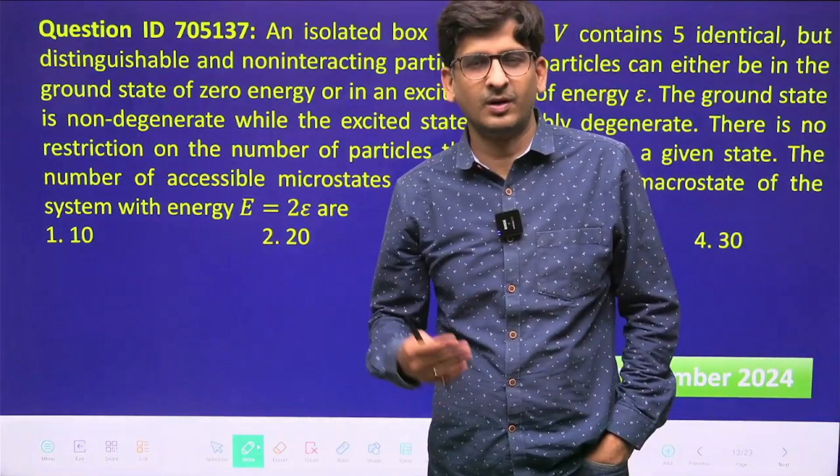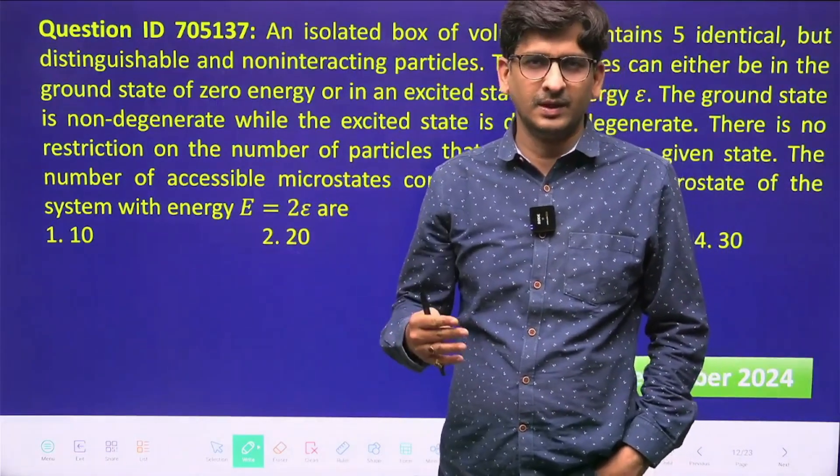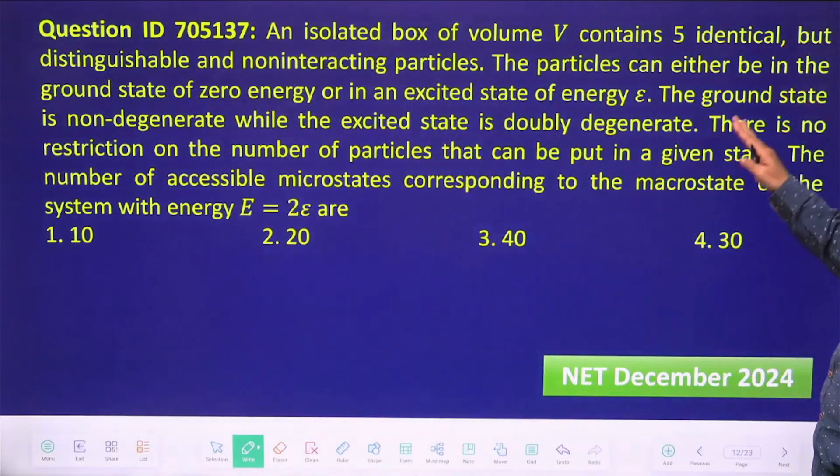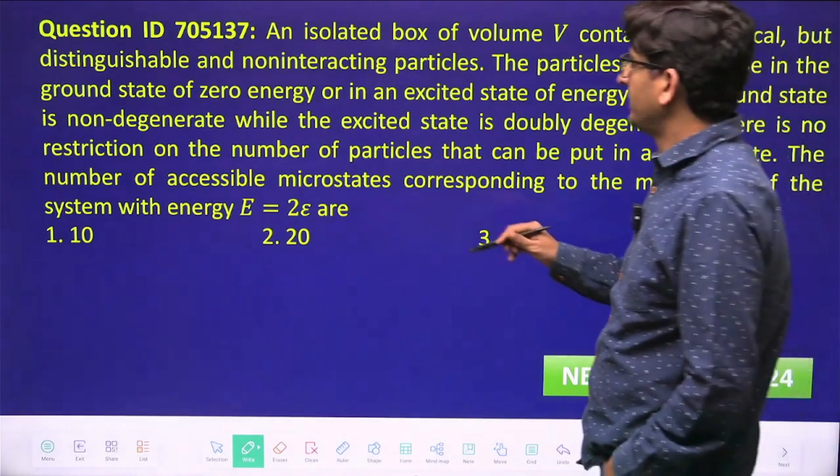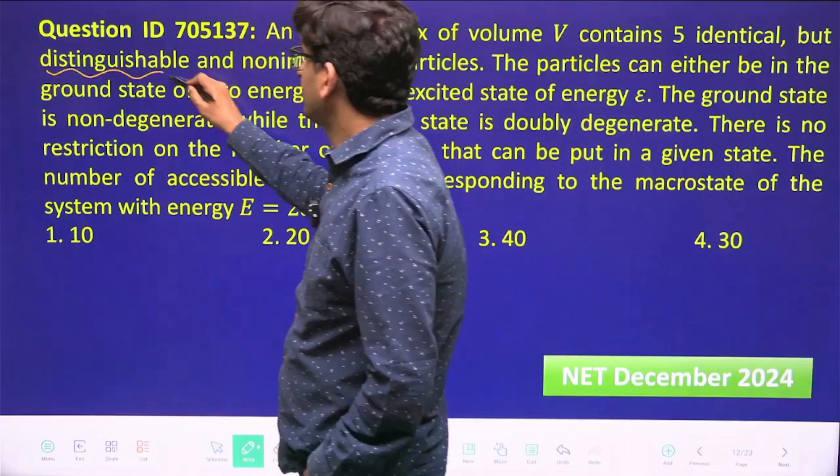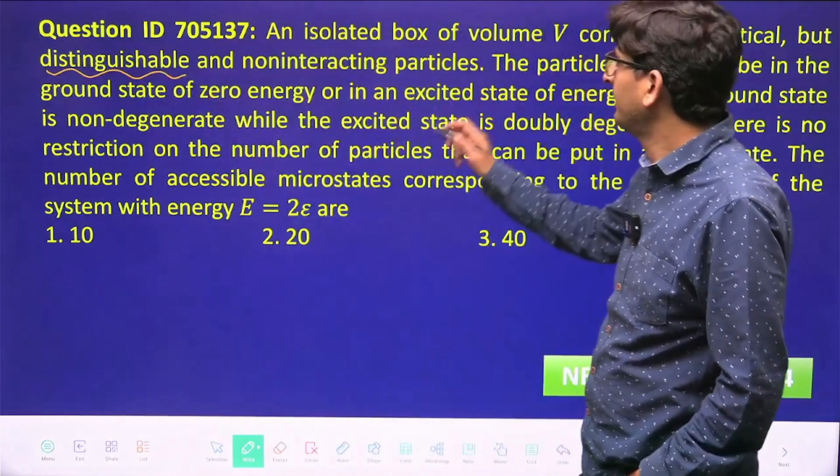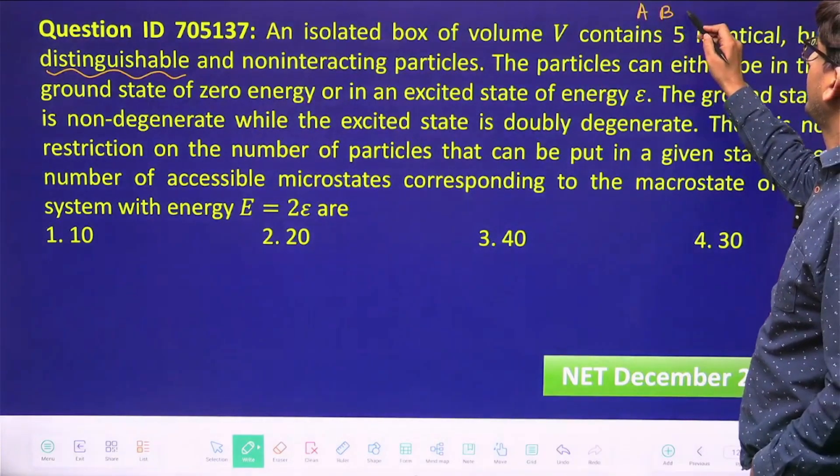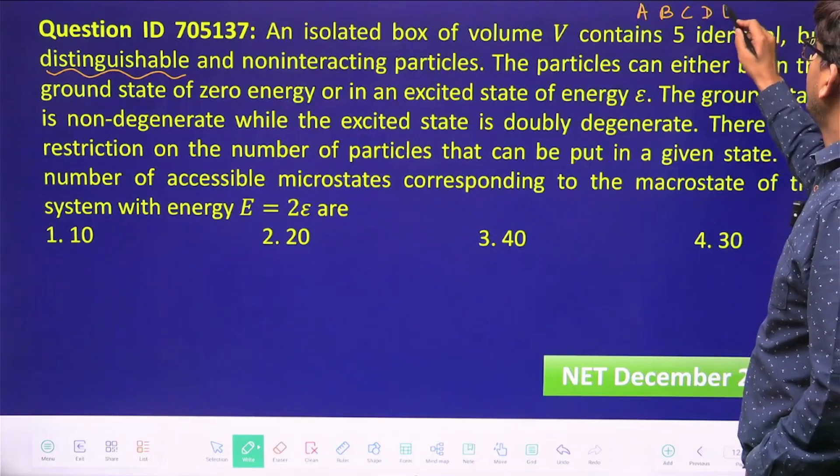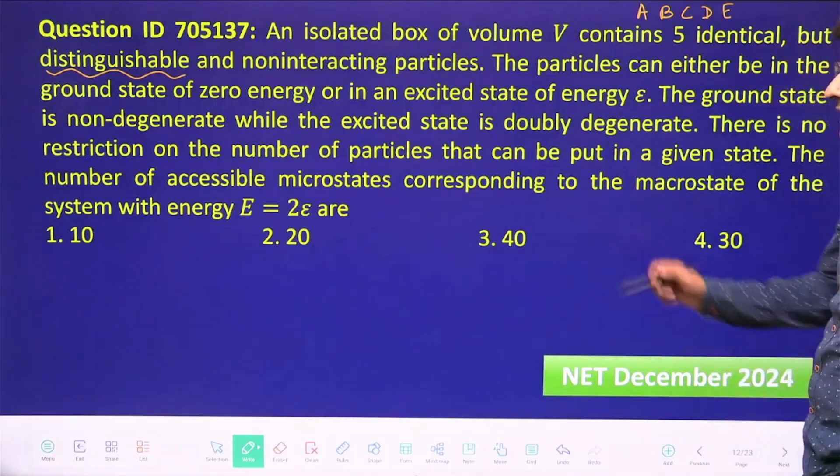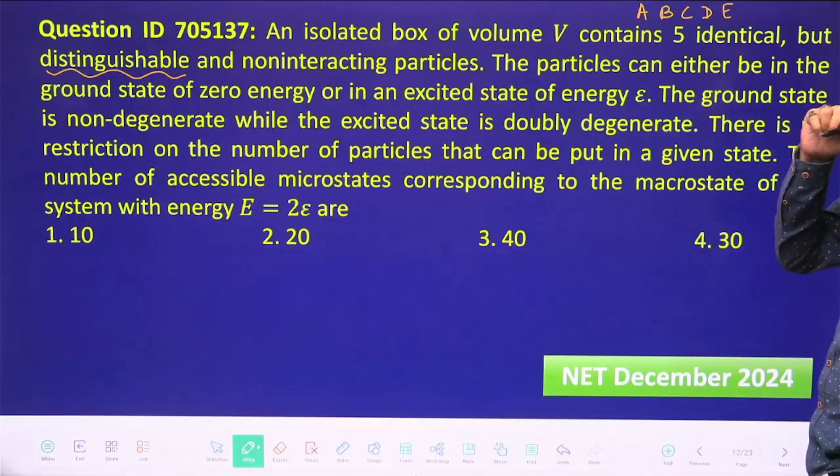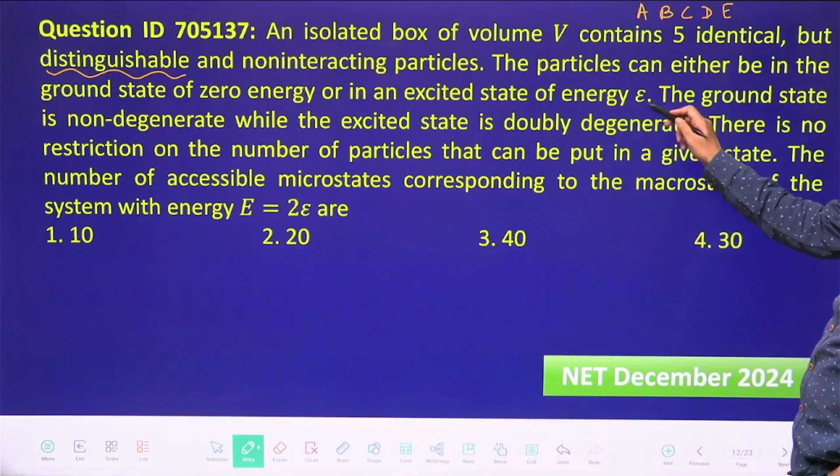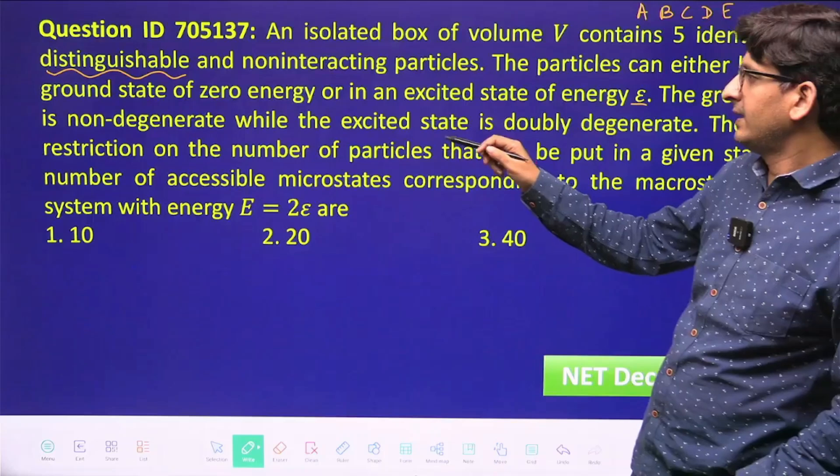An isolated box of volume V contains five identical but distinguishable particles—okay, so the particles are distinguishable, they are classical particles. For example, if there are five particles, you can just assume that they are A, B, C, D, and E. Five particles, okay, and they are non-interacting. The particles can either be in the ground state of zero energy and excited state of energy e.